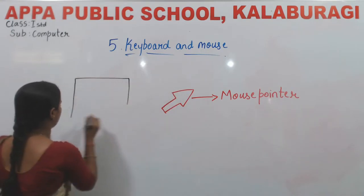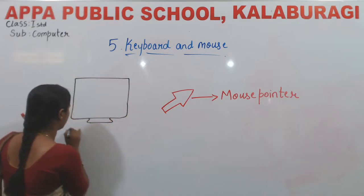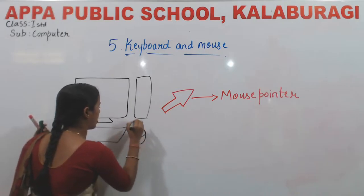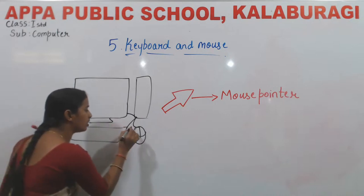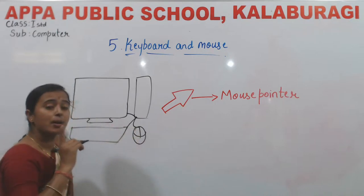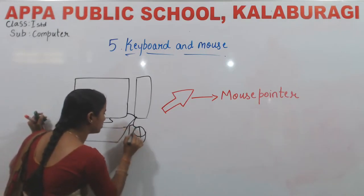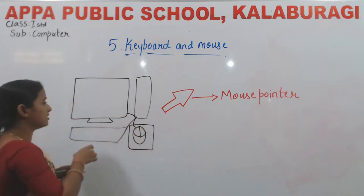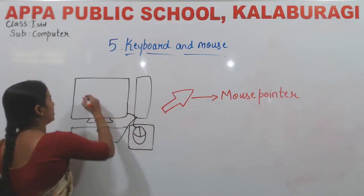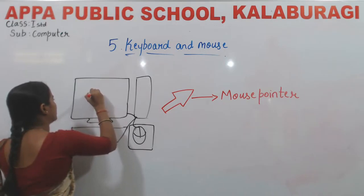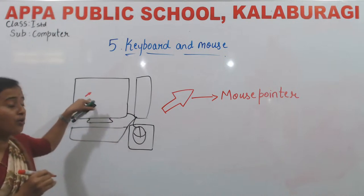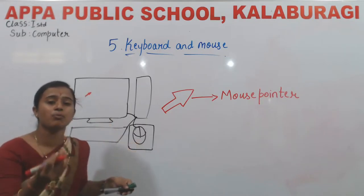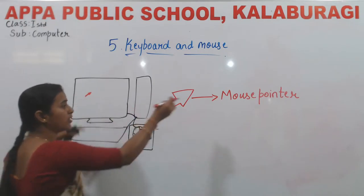This is the monitor. When we move the mouse, we can see a small arrow on the monitor screen — this is called the mouse pointer. We have to place the mouse on the mouse pad. When we move the mouse, you can see the small arrow on the monitor screen, and that small arrow is called the mouse pointer.